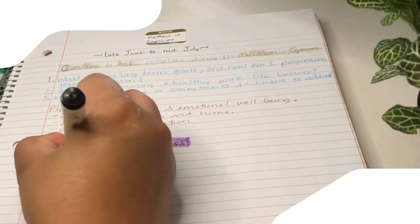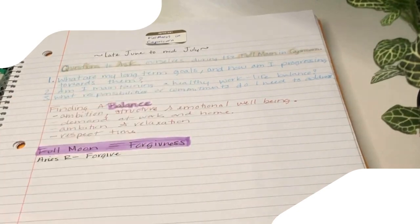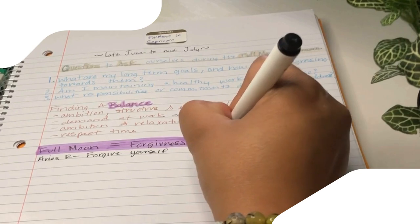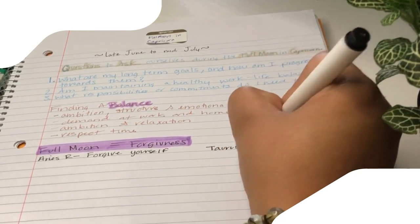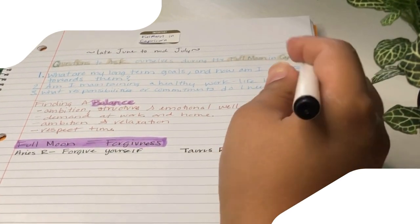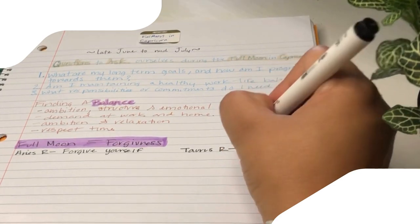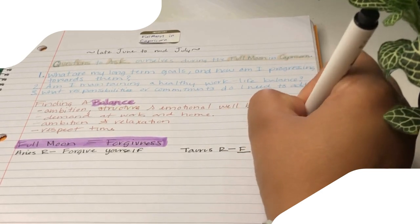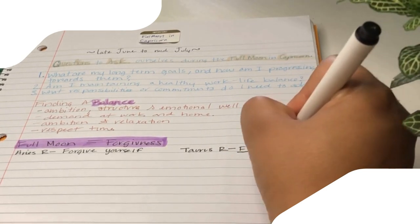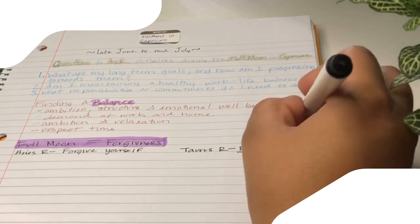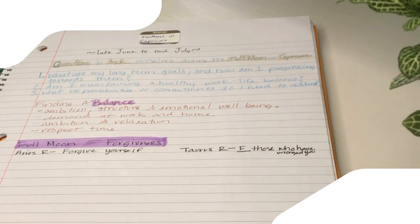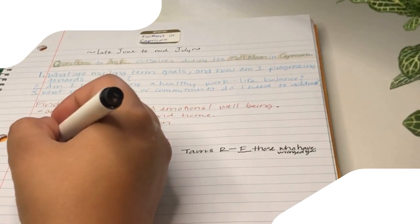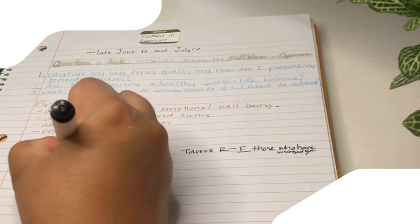Forgiveness under the influence of Capricorn's steadfast energy is not about condoning or forgetting the actions that have caused hurt. Instead, it's about releasing the emotional burden that comes with holding onto grudges and resentments. Capricorn's disciplined nature aids in setting boundaries and creating a structured approach to letting go. It allows us to take a pragmatic view of our experiences, recognizing that carrying the weight of unforgiveness and grievances only hinders our progress and growth.